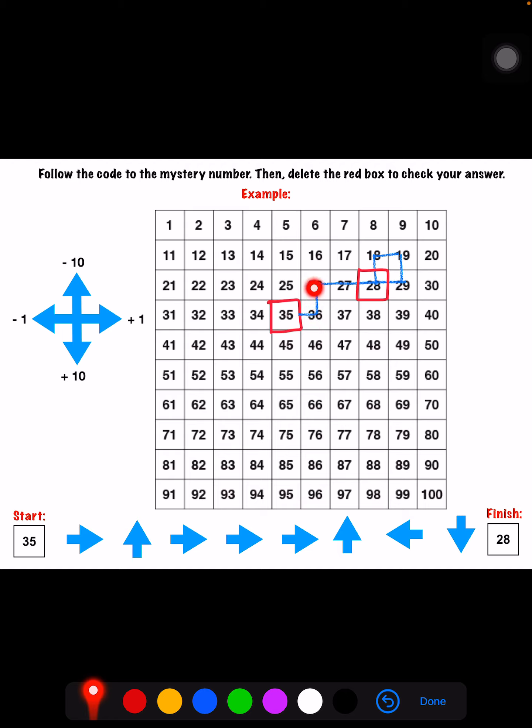The next part says go up. So I go up one and then it says go right one, two, three spots. So I'm going to go one, two, three spots to the right.